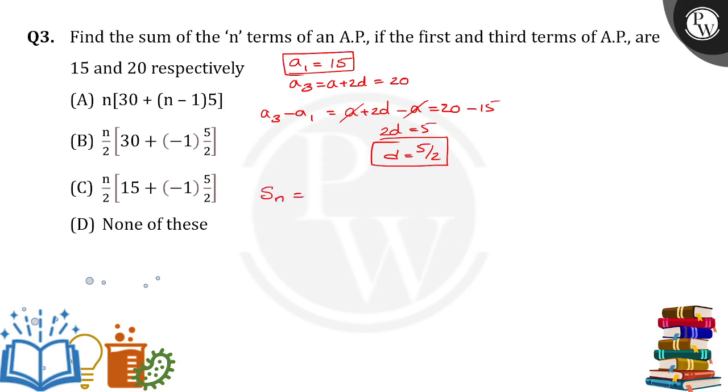Sn is equal to, formula is n by 2 into 2a plus n minus 1 into d. So Sn equals n by 2, 2 into 15 plus n minus 1 into 5 by 2. Right, so n by 2 into 30 plus n minus 1 into 5 by 2.